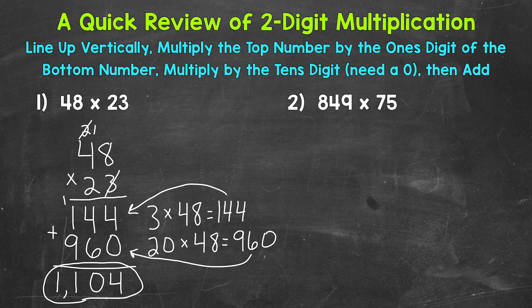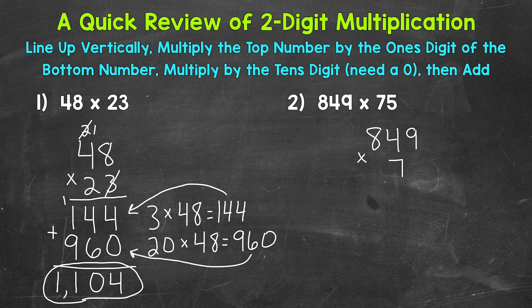Let's move on to number two, where we have 849 times 75. Remember, the first thing we need to do is line this up vertically — up and down — so we have 849 times 75.